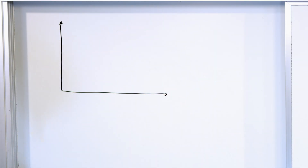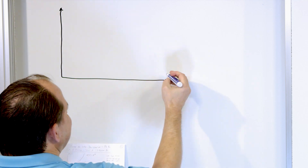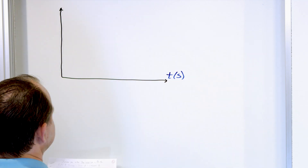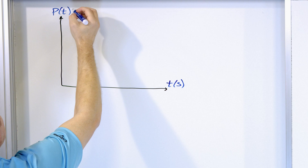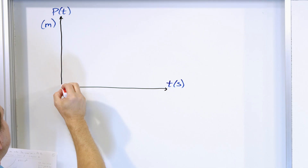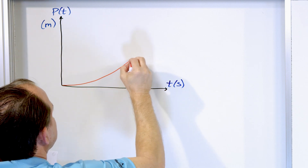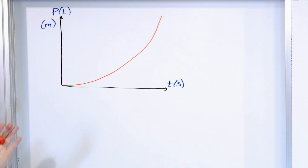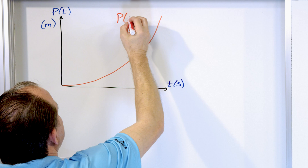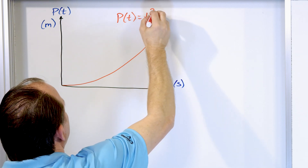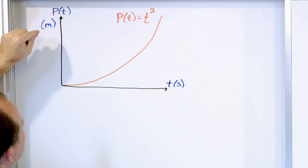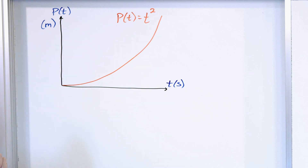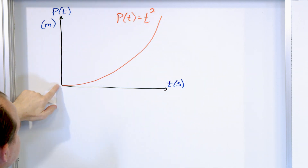We're going to plot the position of some particle as a function of time. So this axis over here will be the time axis in seconds. And over here we're going to have the position of some particle as a function of time, with units in meters. Let's take a look at some sort of parabolic motion — this is the shape of half a parabola. So the position as a function of time is equal to t squared. This is the distance away from the origin as a function of time. At zero seconds, zero squared is zero, so I'm at position zero.